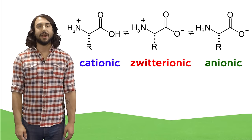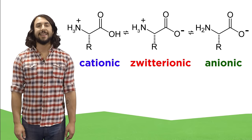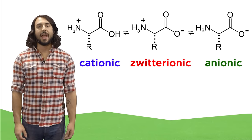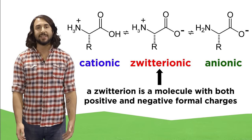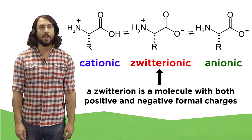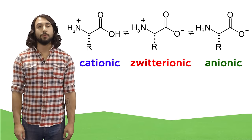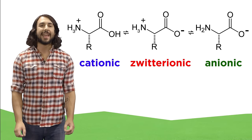We know what cations and anions are, they're positively charged and negatively charged species, and a zwitterion is a molecule that has both a positive and negative charge. The form that an amino acid will take depends on the pH of its environment.